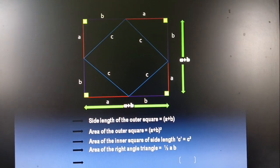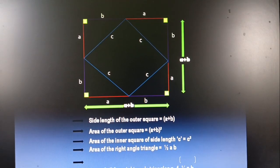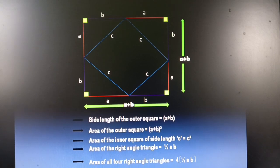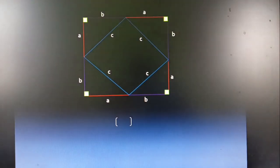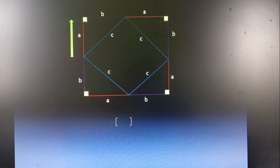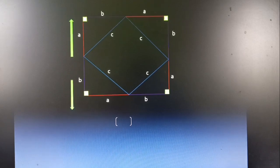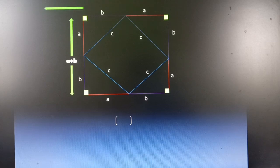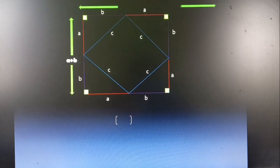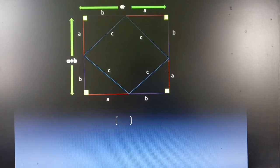Therefore, the area of all 4 right angle triangles are 4 times half AB. We can also observe that the area of the outer square can be written as the area of all 4 right angle triangles plus the area of the inner square.